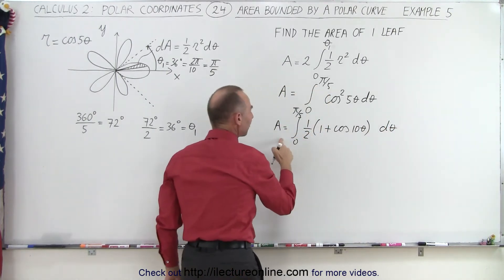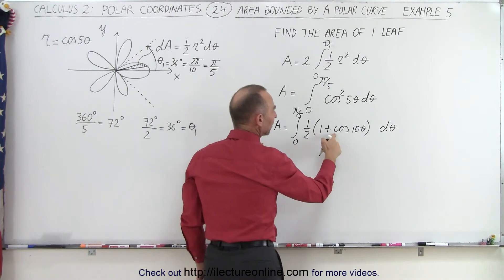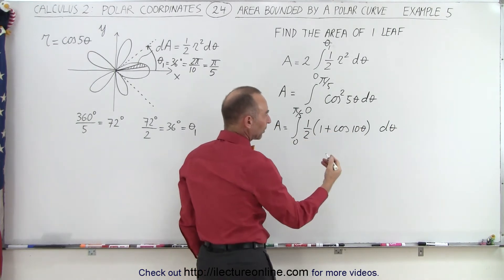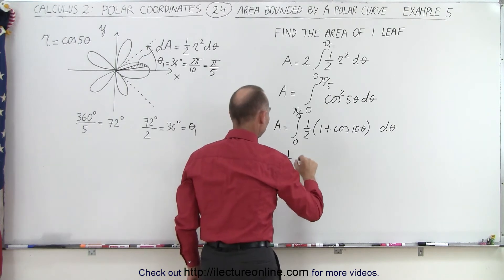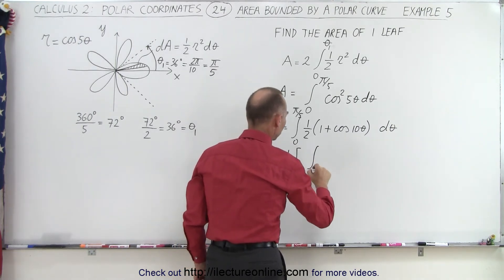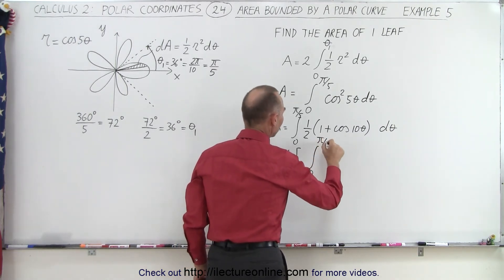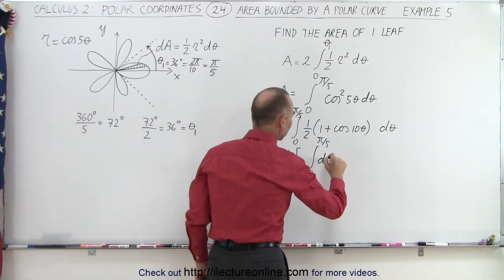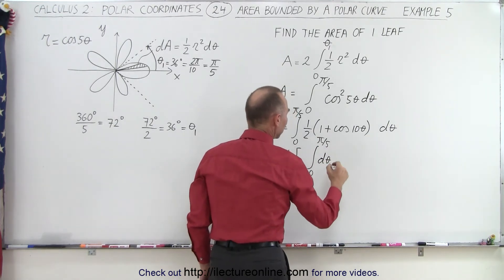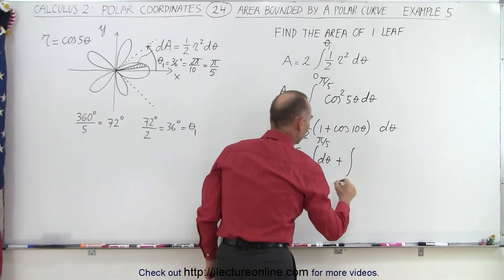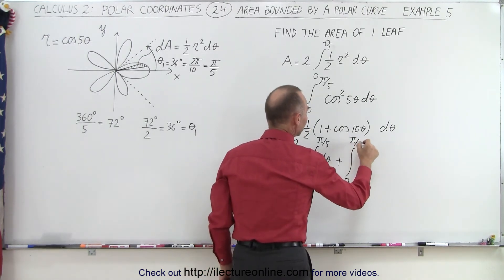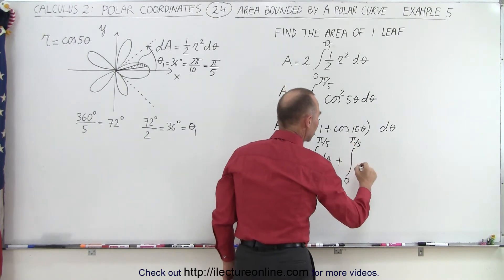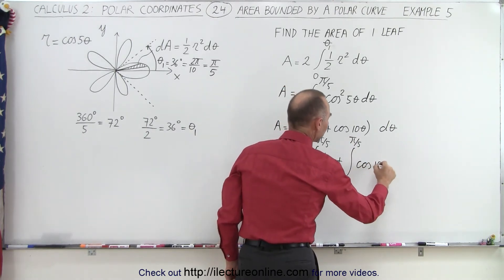We can take the one-half out, and we could probably write this as two separate integrals to make things a little bit easier, so the area is equal to one-half times the first integral from zero to pi over five of d theta, and then plus the integral from zero to pi over five of the cosine of 10 theta.